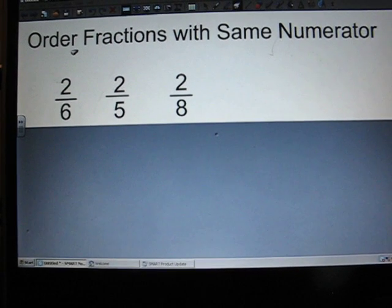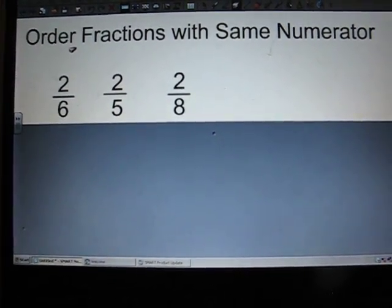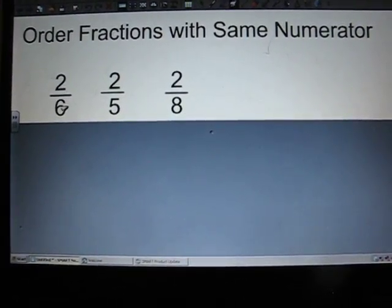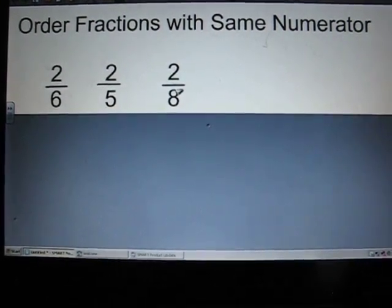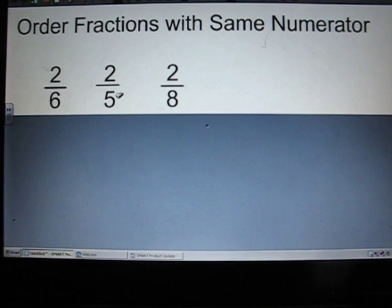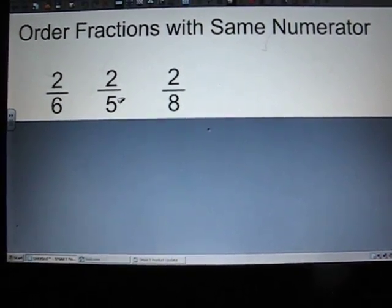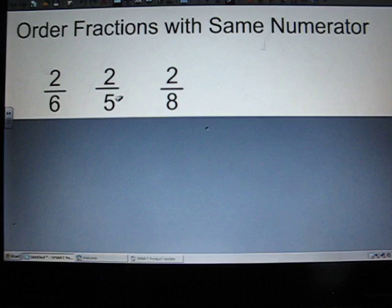Well, we remember that when our numerators are the same, we have to look at the denominators to find out which one is least or which one is greatest. So, I have a six, a five, and an eight. So, we're not going to look at the numerators anymore. We're going to look at the denominators.